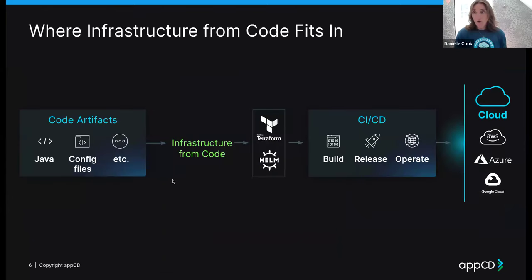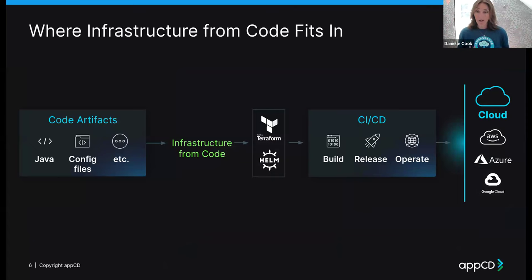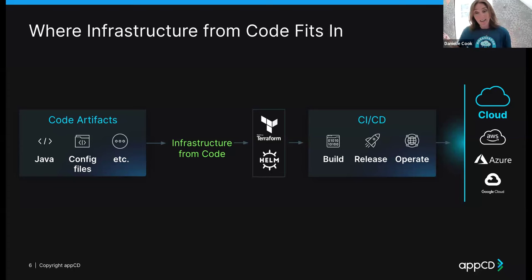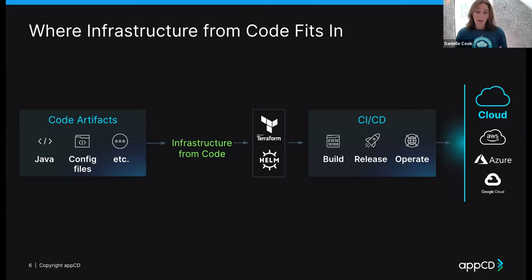Moving on — where does infrastructure from code fit? We really see it at the intersection of developers and DevOps. It should fit within your existing pipelines without recreating the wheel. Your developer should be able to write their code, ship it, use infrastructure from code without a major lift, and get it into your CI/CD pipeline. It's adding a step that cuts down on days, weeks, in some cases months, and gets you to market faster.